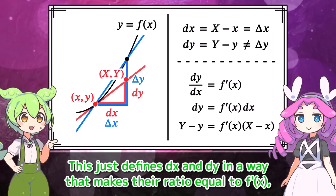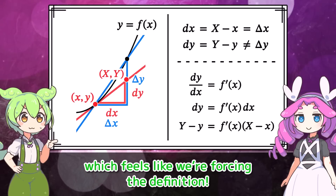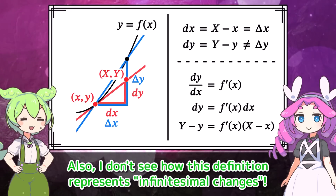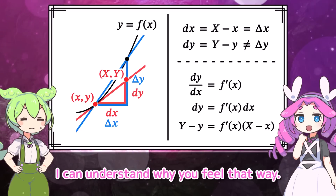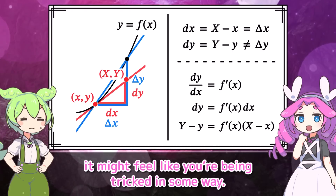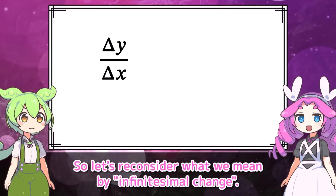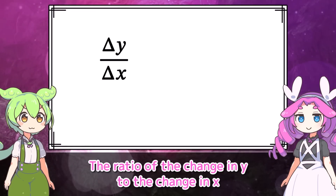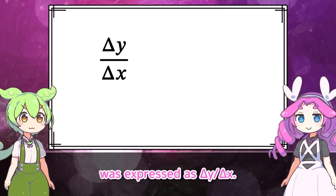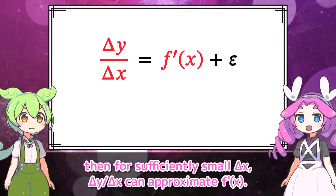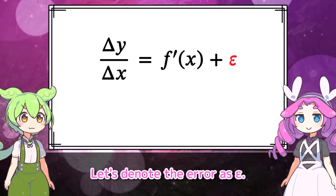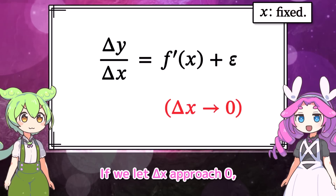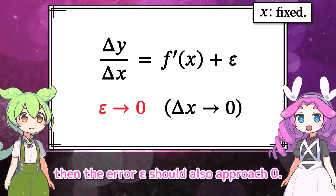But something still feels off. This just defines dx and dy in a way that makes their ratio equal to f prime of x, which feels like we're forcing the definition. Also, I don't see how this definition represents infinitesimal changes. I can understand why you feel that way — when you first hear this definition, it might feel like you're being tricked. So let's reconsider what we mean by infinitesimal change. The ratio of the change in y to the change in x was expressed as delta y over delta x. If f prime of x exists, then for sufficiently small delta x, delta y over delta x can approximate f prime of x. Let's denote the error as epsilon. If we let delta x approach zero, then the error epsilon should also approach zero.